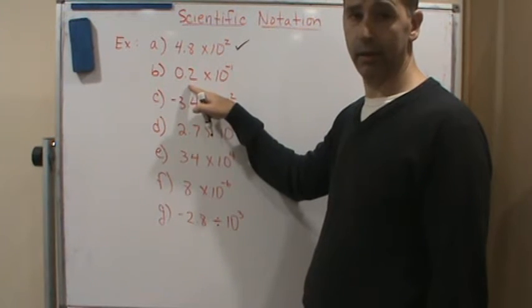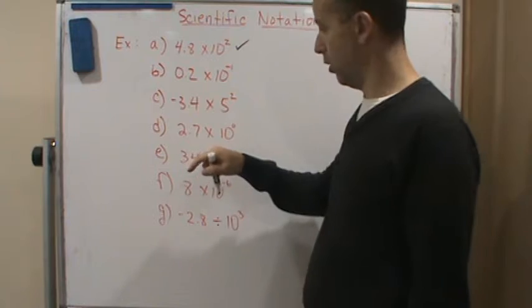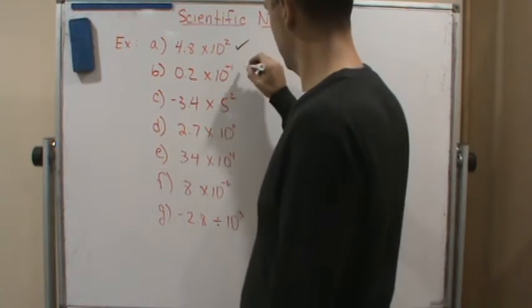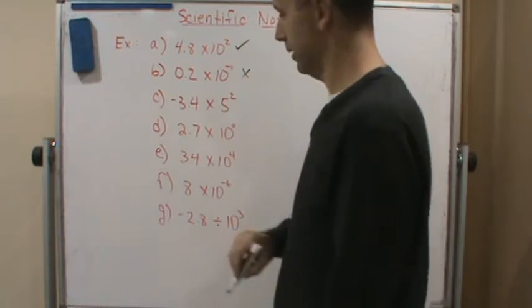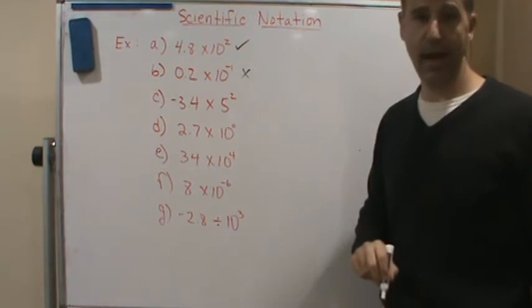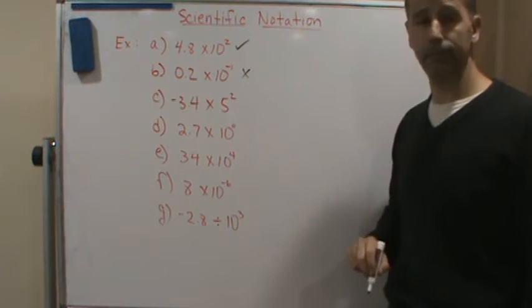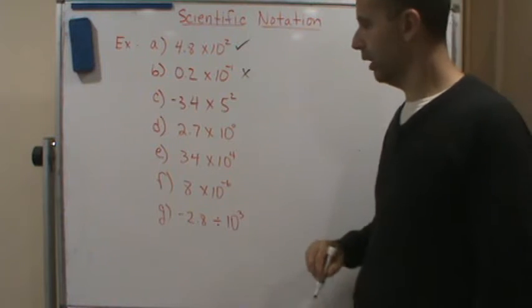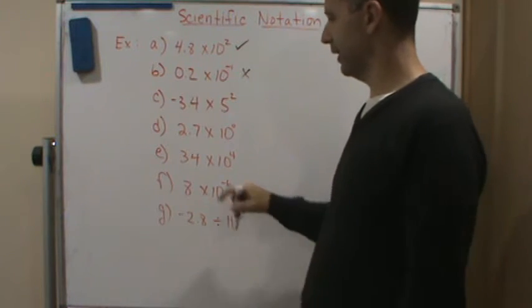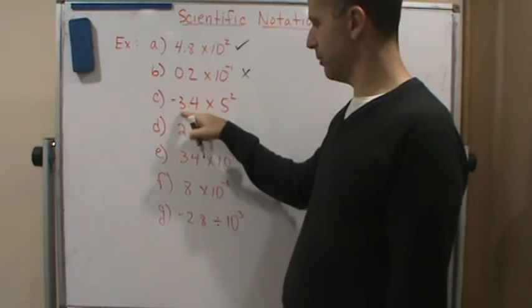Here, for this one, is the first number a number between one and ten? No. Then it's not in scientific notation — we're done.